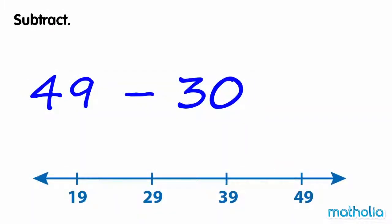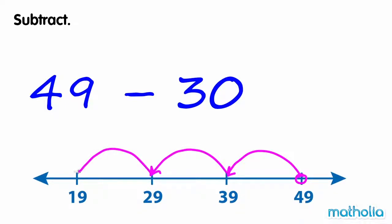Subtract. We need to find 49 minus 30. Let's start at 49 and count back three tens: 49, 39, 29, 19.